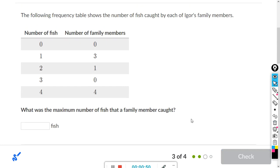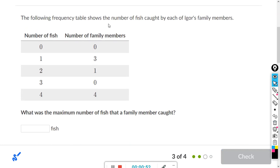All right, the following frequency table shows the number of fish caught by each of Igor's family members. What is the maximum number of fish that a family member caught? Okay, well clearly this column here is for the number of fish.